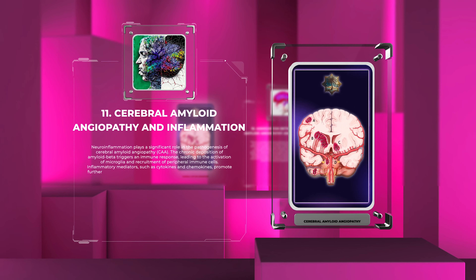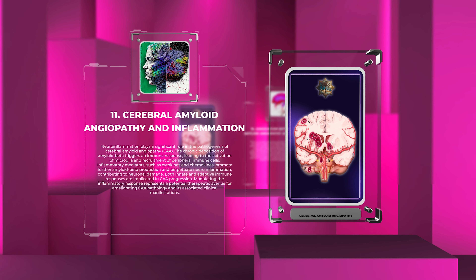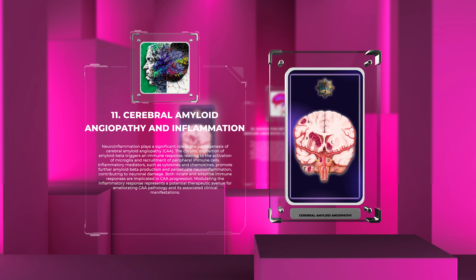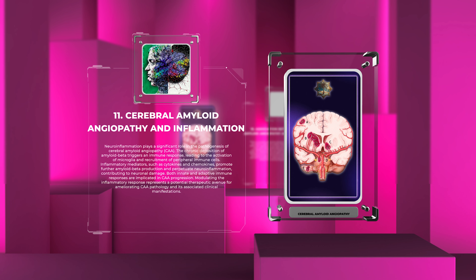Neuroinflammation plays a significant role in the pathogenesis of cerebral amyloid angiopathy, CAA. The chronic deposition of amyloid beta triggers an immune response, leading to the activation of microglia and recruitment of peripheral immune cells. Inflammatory mediators, such as cytokines and chemokines, promote further amyloid beta production and perpetuate neuroinflammation, contributing to neuronal damage. Both innate and adaptive immune responses are implicated in CAA progression. Modulating the inflammatory response represents a potential therapeutic avenue for ameliorating CAA pathology and its associated clinical manifestations.